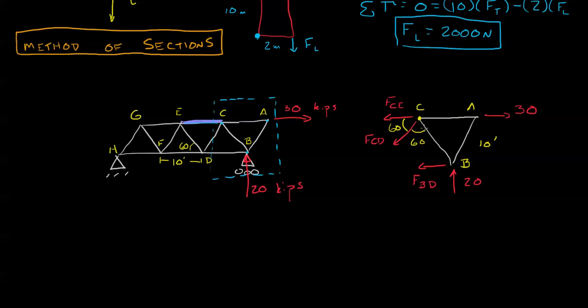Now one of the things you might be tempted to do is say, okay, well we know that we could sum the forces around point C. But if you do that, you end up with unknown force CE, unknown force CD, and force CB is unknown as well. So you're once again pushed back to the method of joints.